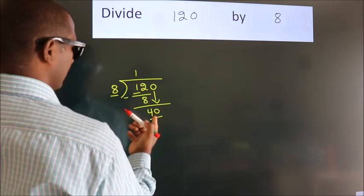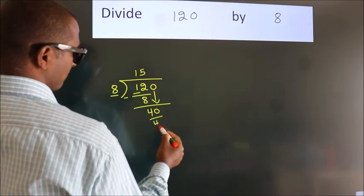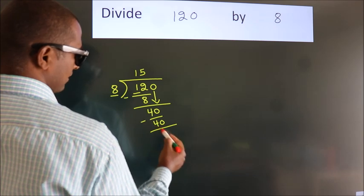When do we get 40 in the 8 table? 8 fives 40. Now we subtract. We get 0.